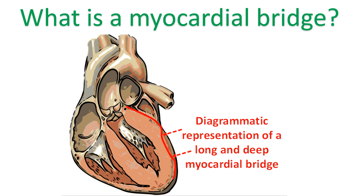Occasionally, a segment of the coronary artery passes through the myocardium. This causes a narrowing of that region when the heart muscle contracts, and is known as myocardial bridging.